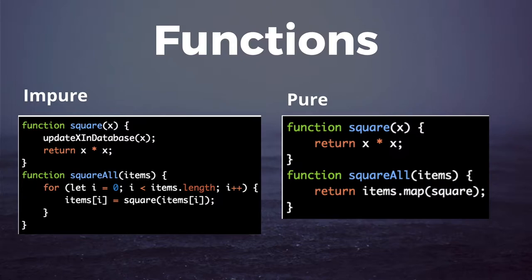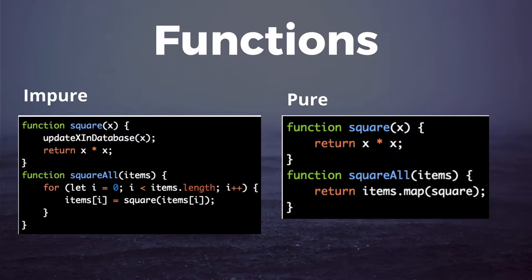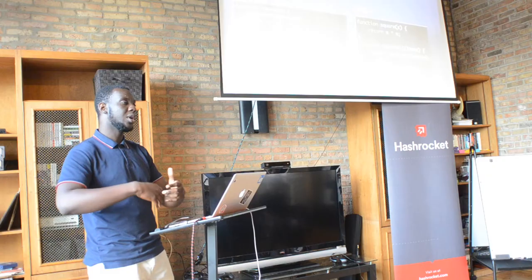A pure function, by contrast, takes some input x and returns some output — that's all it does. It doesn't make any changes to the world. Input, output, input, output. A more nuanced example is 'square all,' a JavaScript function that takes some items and squares all elements in that collection. However, the impure version modifies the collection in memory, which is dangerous because others aren't aware changes were made. A pure version of 'square all' simply maps over the existing items collection, creates a new copy, and returns that along with its operations.